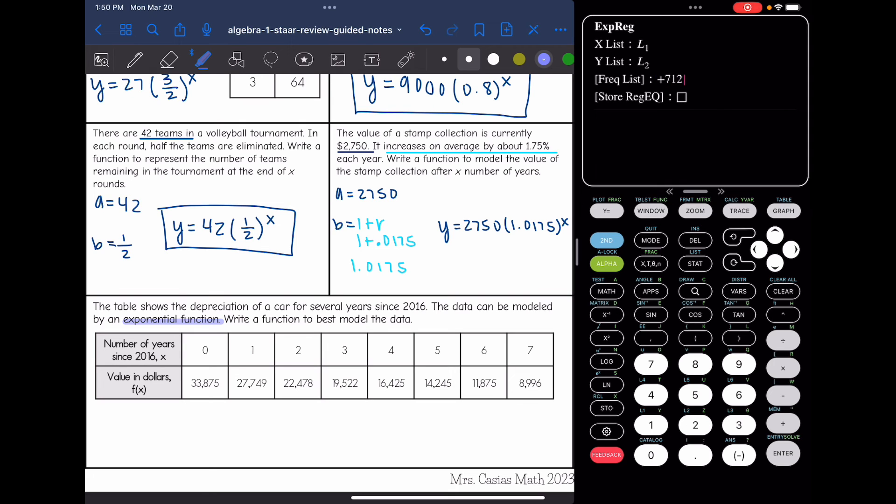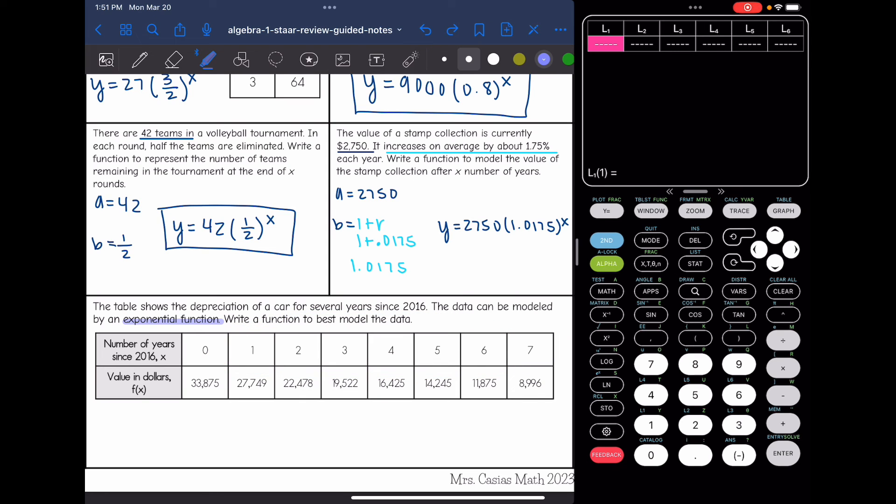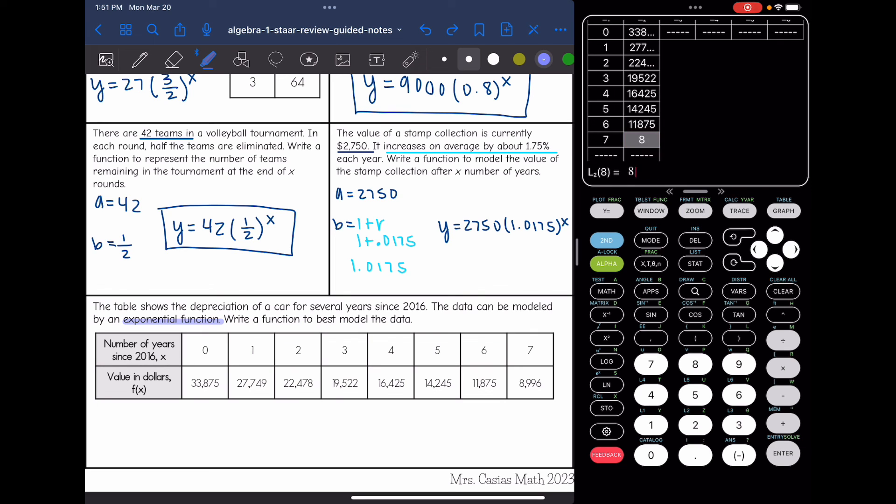Let me reset my calculator. It's being a little weird. Second plus 712. Okay, stat enter. And I am going to put the x values, the number of years in L1. So 0 to 7. And then my y values are going to go in L2.